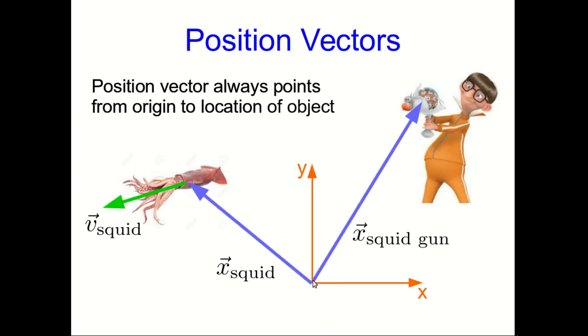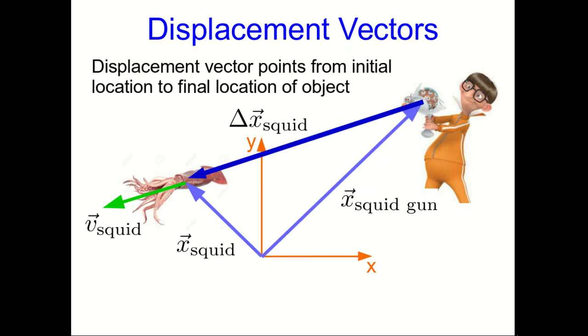On the other hand, if you translate the axes to a different place, now those vectors have both changed. On the other hand, a displacement vector, a delta x, points from the initial location of an object to the final location, where again, as usual, you have to worry about what you mean by initial and final.